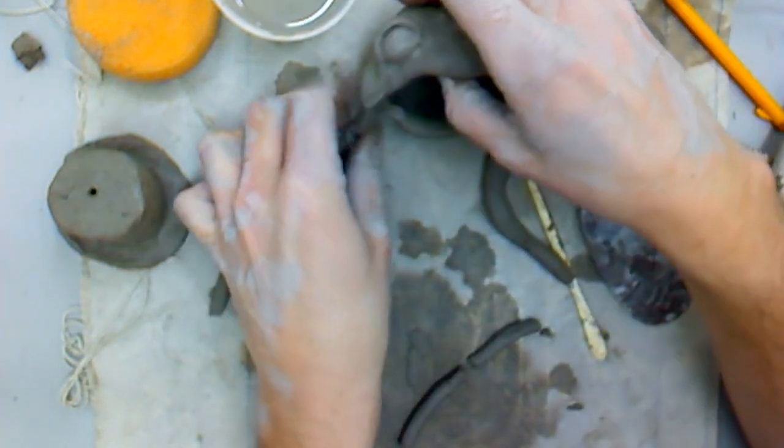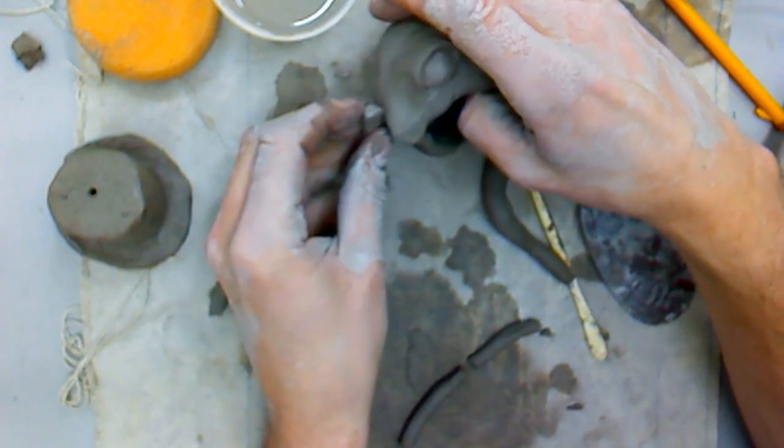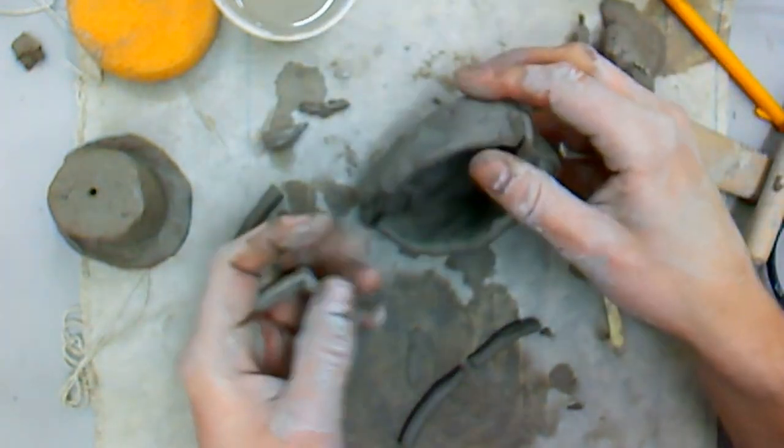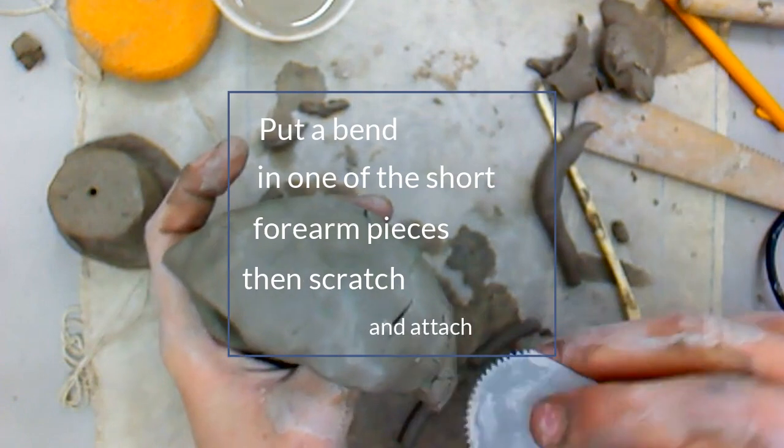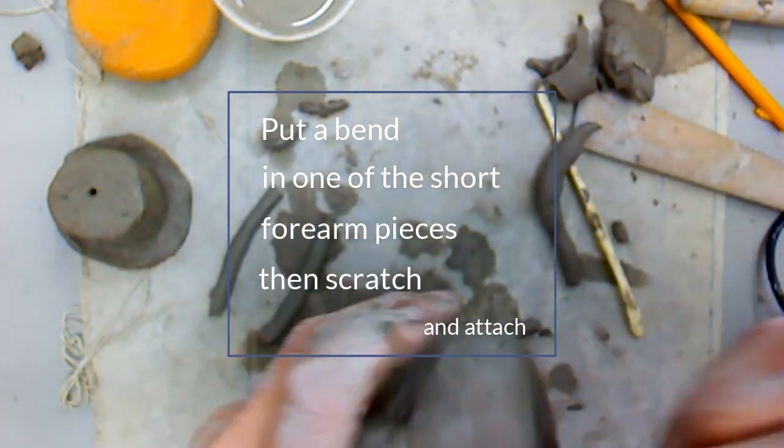For the front legs, we're going to take one of our shorter pieces, we're going to put about a right angle, or even a little bit more than a right angle, into that piece of a bend.